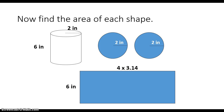Now we can find the area of each shape. To find the area of a circle, we do pi times radius times radius, and for pi we're going to use 3.14. Two times two times 3.14 gives me 12.56 inches squared — because it's area, I still need to square my units. Now we find the area of our rectangle. The circumference of the circle — 3.14 times four — gives 12.56 inches. Then I'd multiply that by six to get my area of 75.36 inches squared.